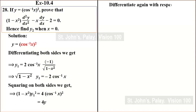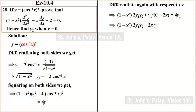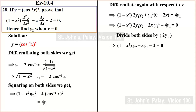Now, squaring both sides, 1 minus x square into y1 square equals 4 times cos inverse x the whole square, which is equal to 4y. Differentiating again using product rule, 1 minus x square into 2 y1 y2 plus y1 square into minus 2x equals 4 y1. Dividing through by 2 y1, we get 1 minus x square into y2 minus x y1 minus 2 equal to 0.